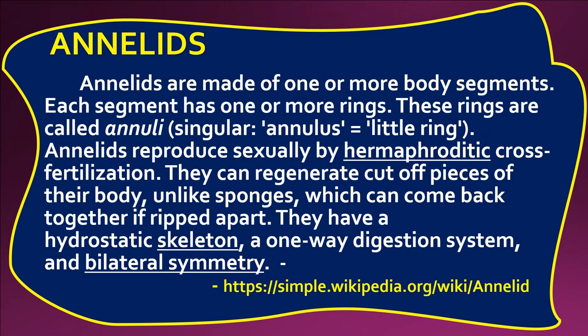Annelids reproduce sexually by hermaphroditic cross-fertilization. They can regenerate cut-off pieces of their body, unlike sponges which can come back together if ripped apart. They have a hydrostatic skeleton, a one-way digestion system, and bilateral symmetry.